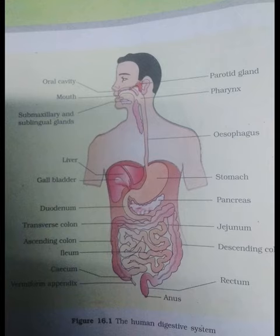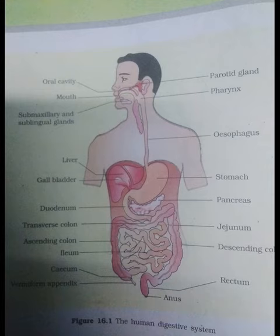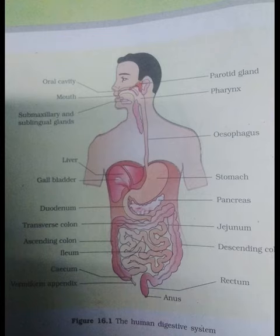Inside the mouth, the teeth masticate the food. The tongue tastes the food and manipulates it for proper mastication by mixing with saliva. Saliva contains a starch digestive enzyme, salivary amylase, that digests the starch and converts it into maltose disaccharide. The food then passes into the pharynx and enters the esophagus in the form of a bolus, which is further carried down through the esophagus by peristalsis into the stomach.